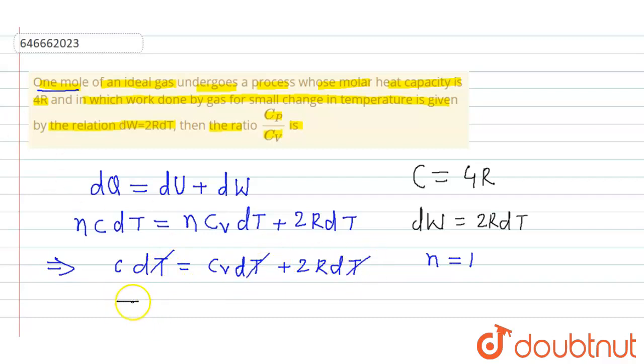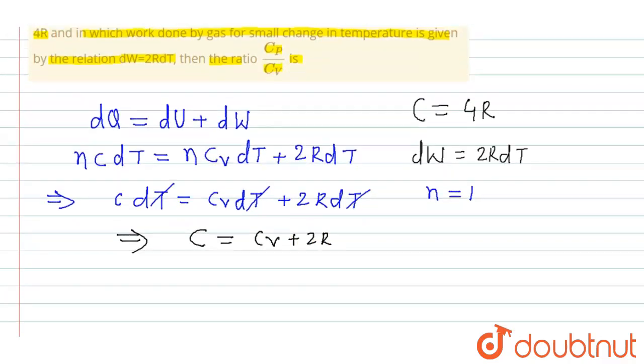So we will have C equal to Cv plus 2R. Now C is given 4R.